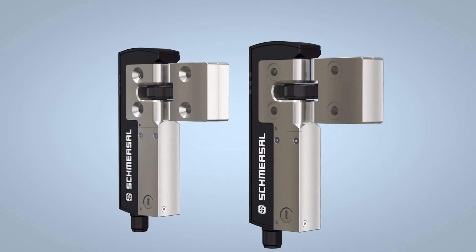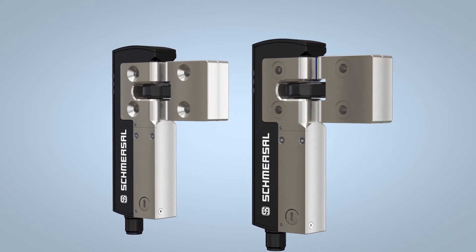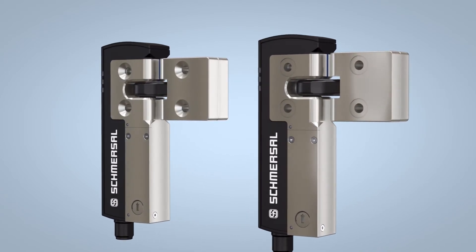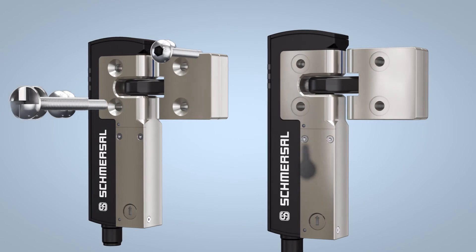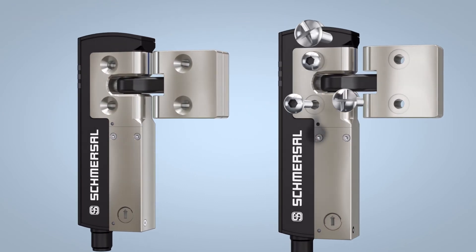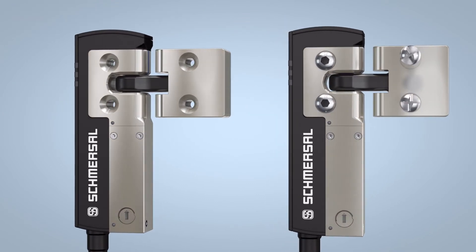The solenoid interlock and the actuator are available with two enclosure versions. For typical use in machine construction, there is an enclosure with a flat screw-on surface for cylinder head bolts.